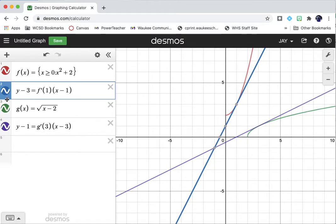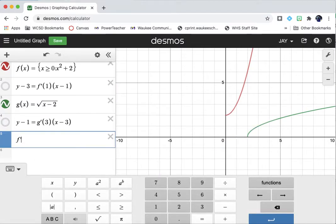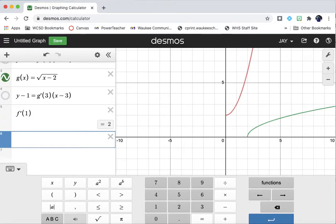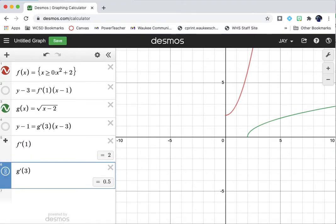Now, lucky for us, Desmos is going to be able to help us figure out what those are. If I just type in f prime of 1, I get 2. And if I type in g prime of the x coordinate there, which is 3, I get 1 half.